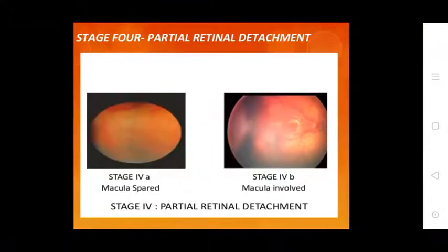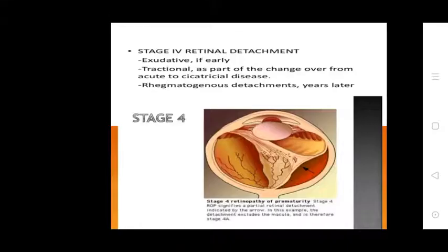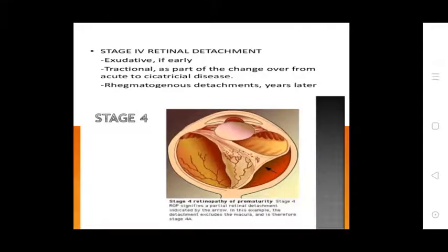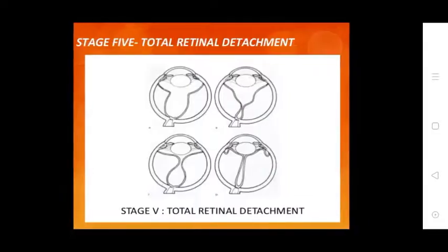Stage 4a involves peripheral partial retinal detachment without macular involvement. Stage 4b involves macular-involved partial retinal detachment. Stage 4 retinal detachment occurs due to early traction. Stage 5 is total retinal detachment.